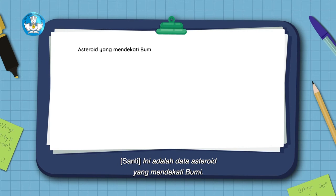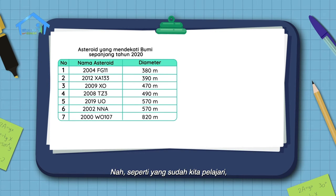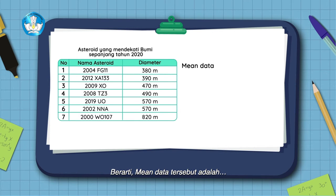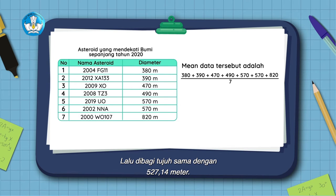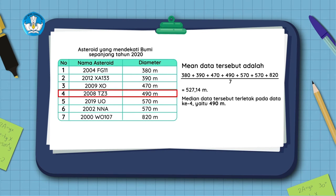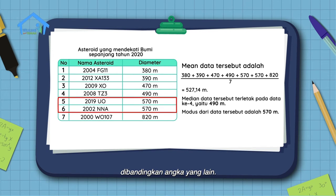Ayo kita hitung min, median, dan modus dari data tersebut. Seperti yang sudah kita pelajari, untuk minnya kita jumlahkan semua data lalu dibagi dengan jumlah data. Berarti min data tersebut adalah 380 + 390 + 470 + 490 + 570 + 820, lalu dibagi 7, sama dengan 527,14 meter. Untuk mediannya, kita urutkan data dari yang terkecil hingga terbesar, mediannya adalah 490 meter. Modus dari data tersebut adalah 570, karena angka ini adalah angka yang paling banyak muncul.